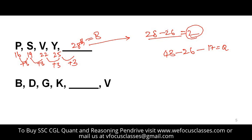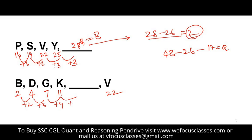The second problem is B, D, G, K, blank, V. Write the place values: B is 2, D is 4, G is 7, K is 11, V is 22. The differences are 2, 3, 4 — so the next difference would be 5. Therefore 11 plus 5 = 16, and the 16th letter is P. So P is the missing letter.